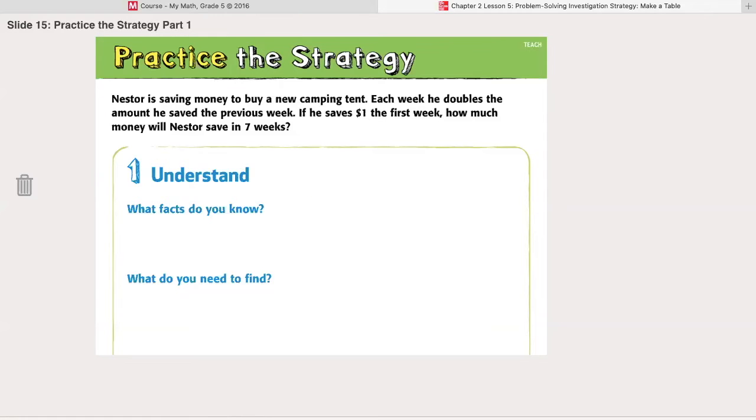The second problem: Nestor is saving money to buy a new camping tent. Each week he doubles the amount he saved the previous week. If he saves one dollar the first week, how much money will Nestor save in seven weeks?